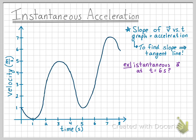Let's find the instantaneous acceleration at the time six seconds. Our first step is to draw a tangent line at the point six seconds. So our tangent line can look something like this.